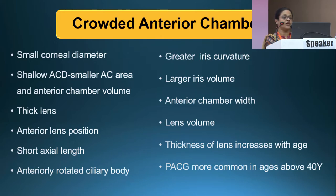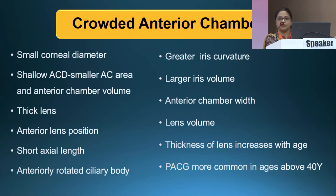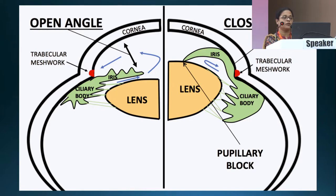ASOCT has given a new focus to the whole anterior chamber angle. We can now identify features like small corneal diameter, shallow anterior chamber depth, along with small anterior chamber area and volume. The lens plays an important role — its thickness, anterior position, and volume all contribute to the crowded anterior chamber. A short axial length, less than 21 mm, especially in nanophthalmic patients, is a very significant risk factor. Additionally, anteriorly rotated ciliary body, greater iris volume, larger iris curvature, and increasing lens thickness with age all contribute — making PACD more common in patients above 40 years.